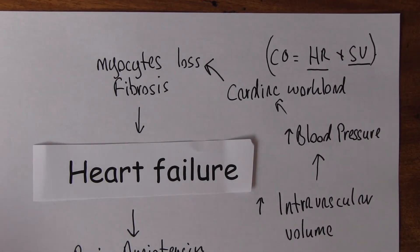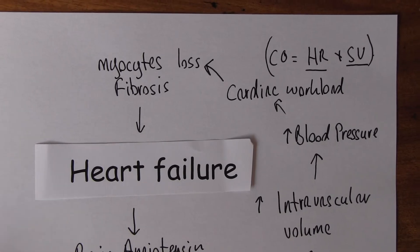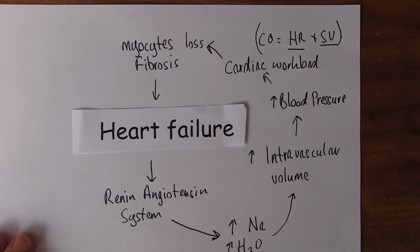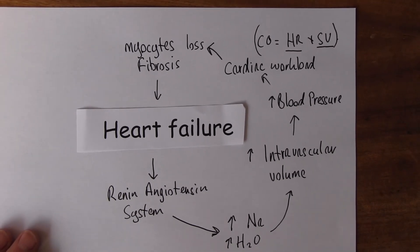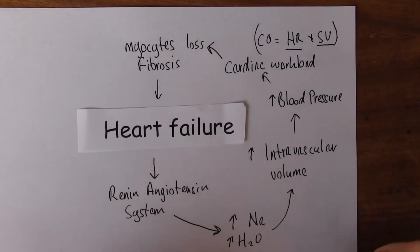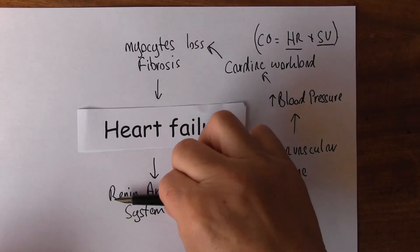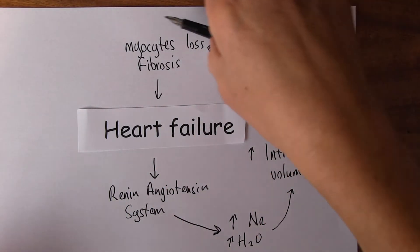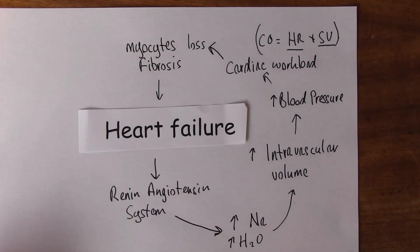So we've got a vicious circle: the myocyte loss and fibrosis leads to more heart failure, which stimulates the renin-angiotensin system, which goes round again and makes everything worse.